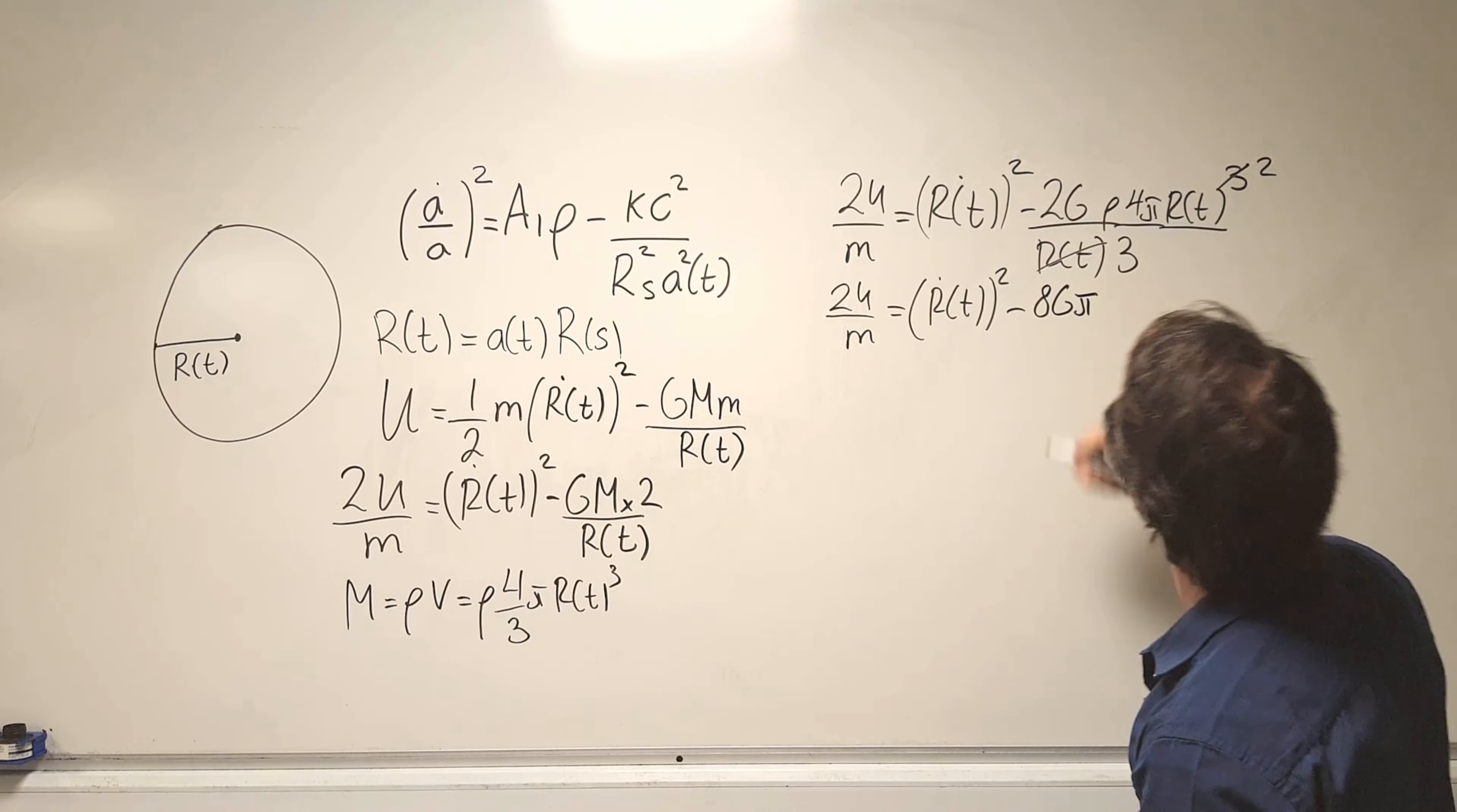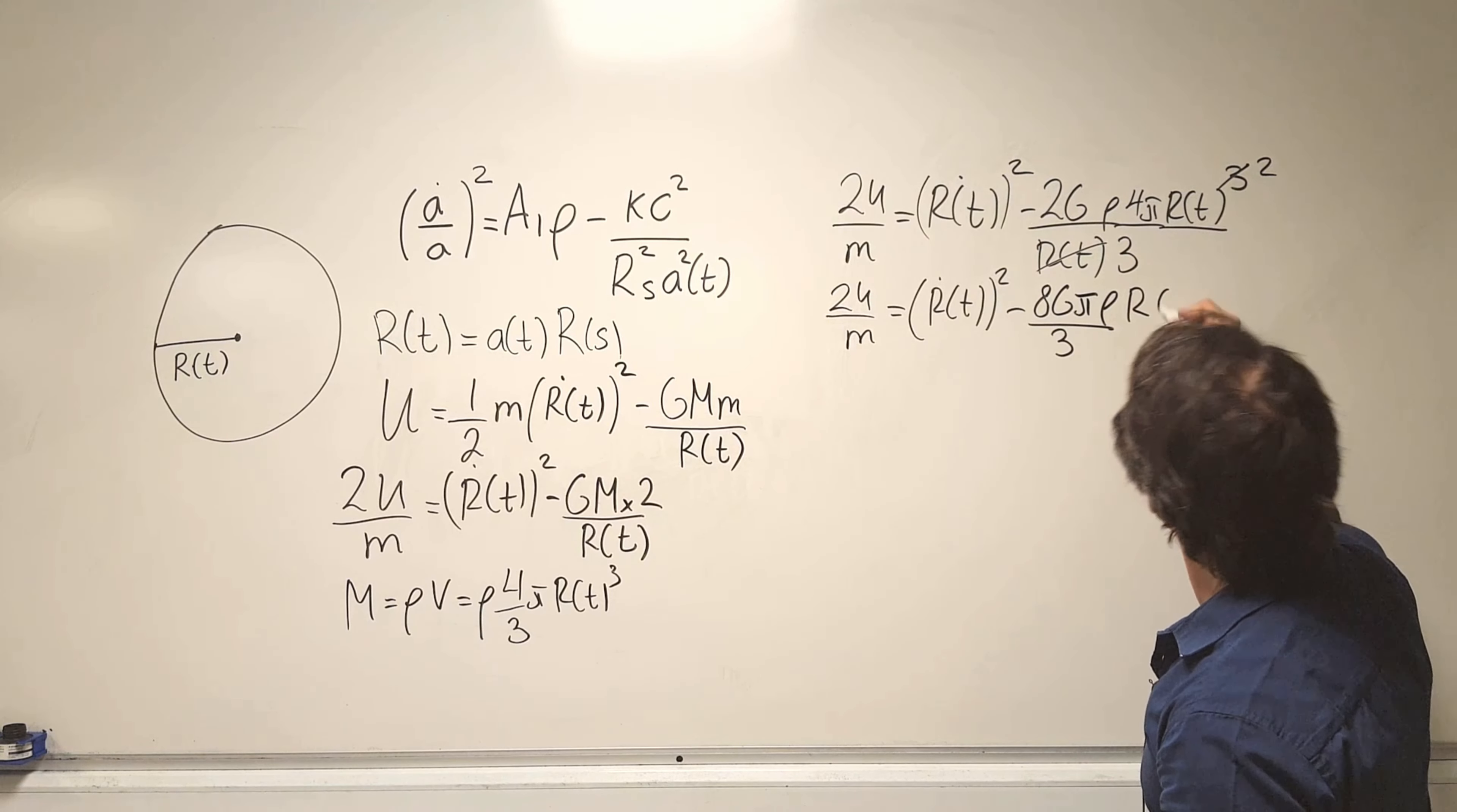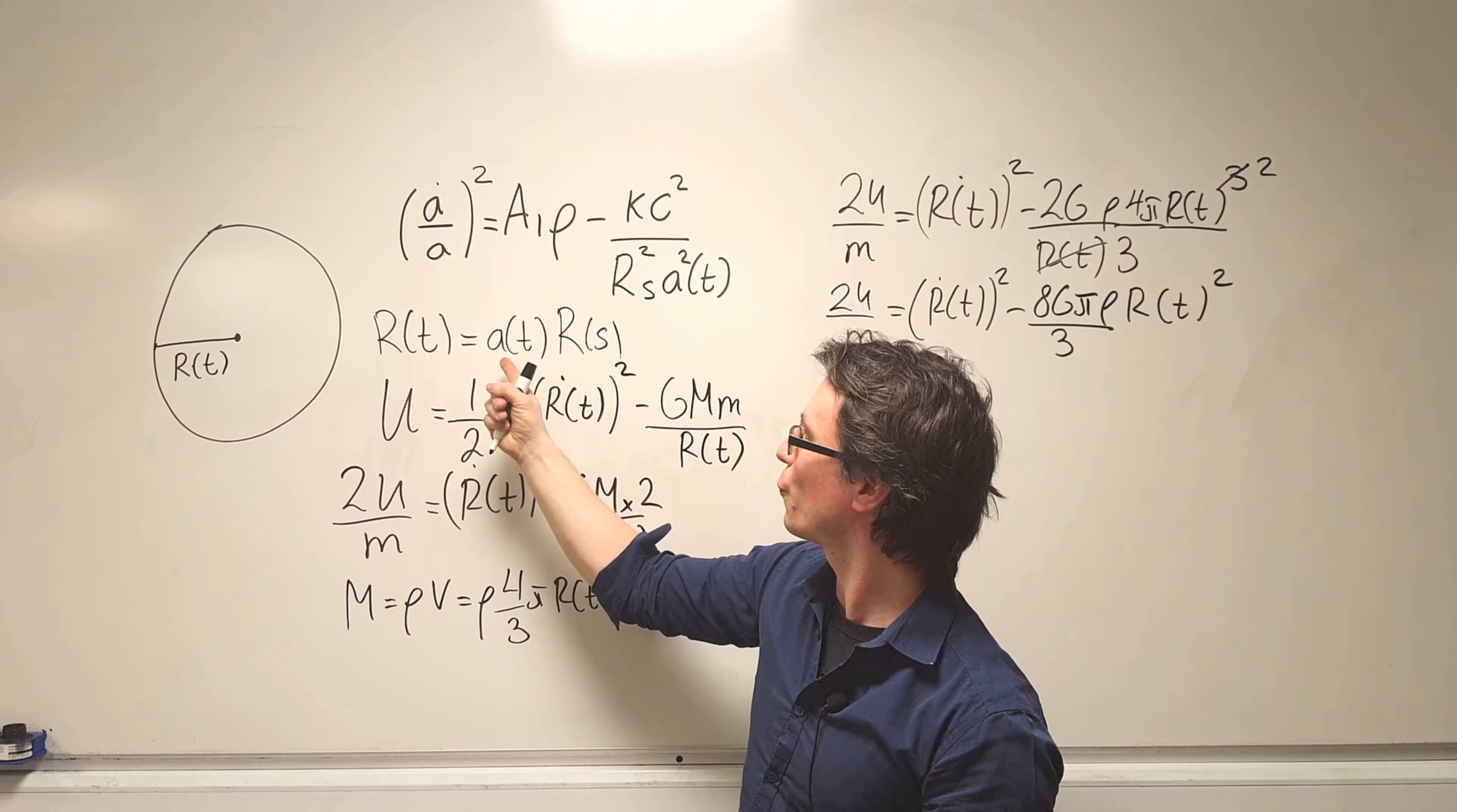Take away now 2 times 4 is going to give me 8G, then a factor of pi and then I have rho, then I'm going to be dividing that by 3 and that's multiplied by R of t squared.